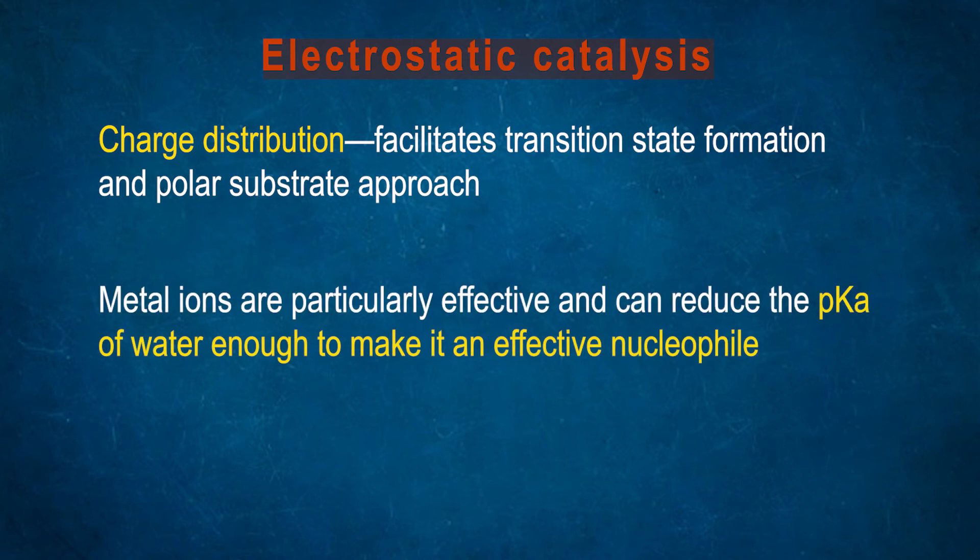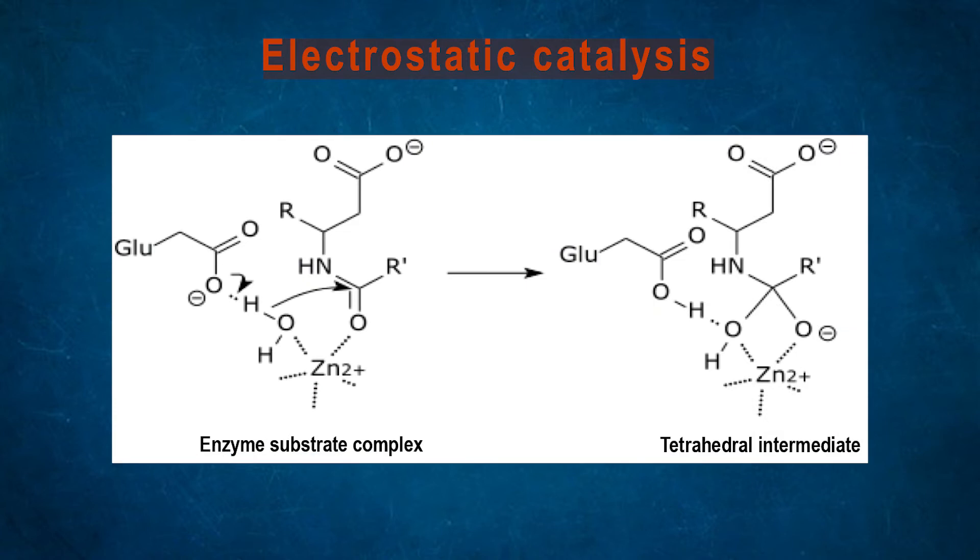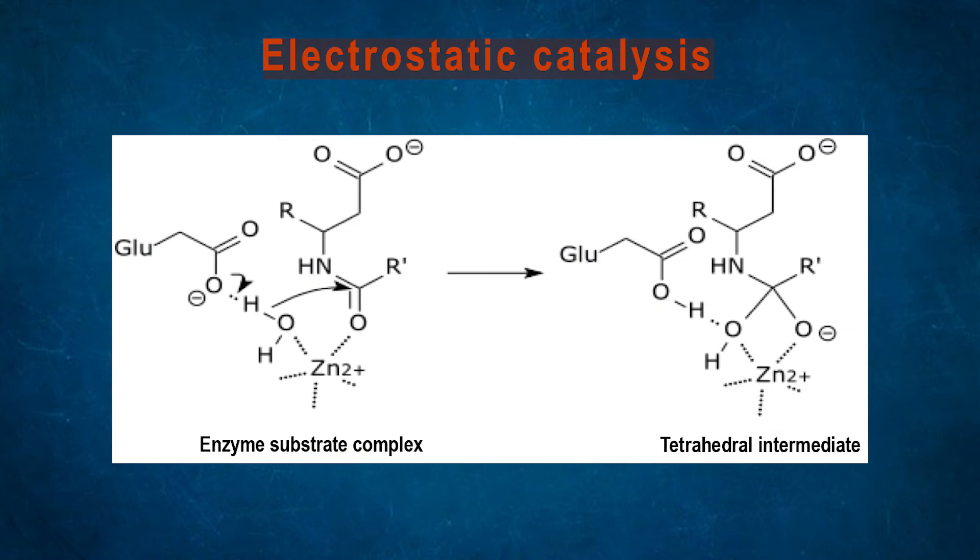Metal ions are particularly effective and can reduce the pKa of water enough to make it an effective nucleophile. In the case of carboxypeptidase's mechanism, we can find the tetrahedral intermediate is formed and stabilized by a partial ionic bond between the zinc ion and the negative charge on the oxygen. The enzyme-substrate complex can be easily formed by making the tetrahedral intermediate.